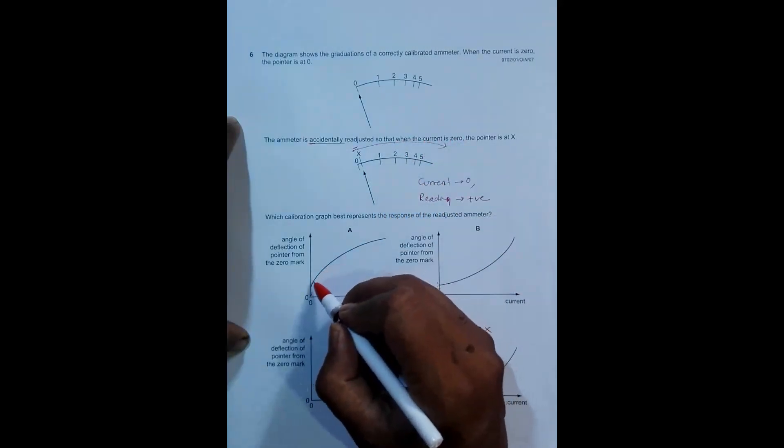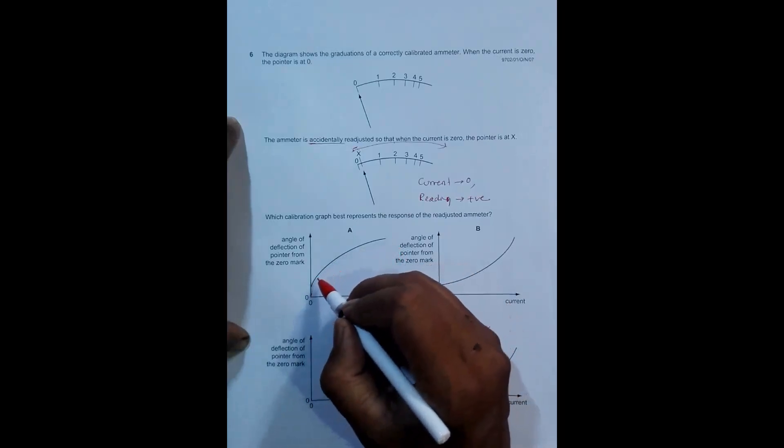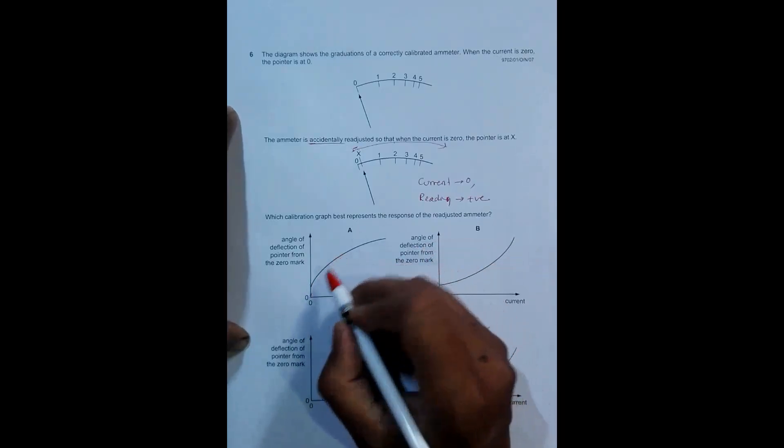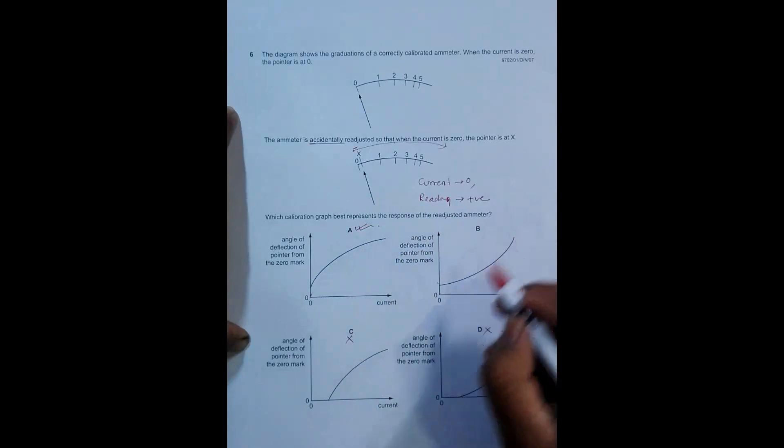At another one ampere the variation is even less. That means the degree of variation goes on decreasing, or the increase of angle per unit current goes on decreasing. So choice A should be the correct answer.